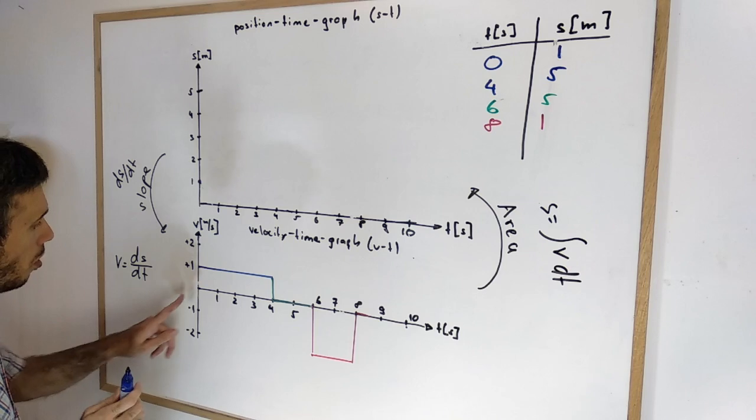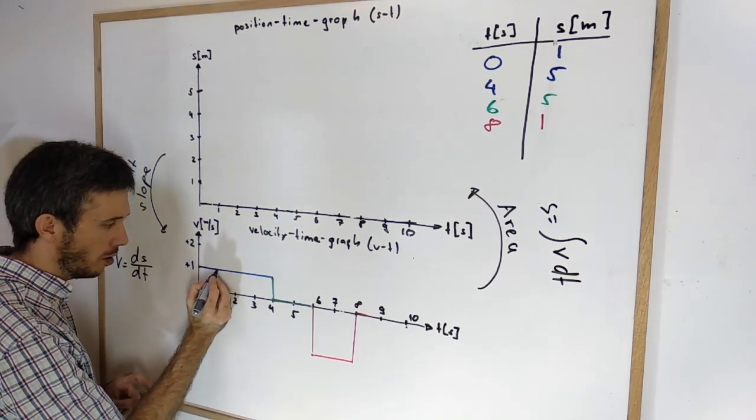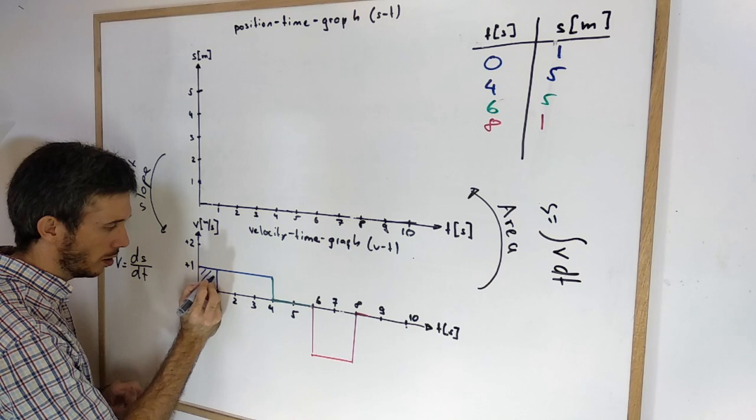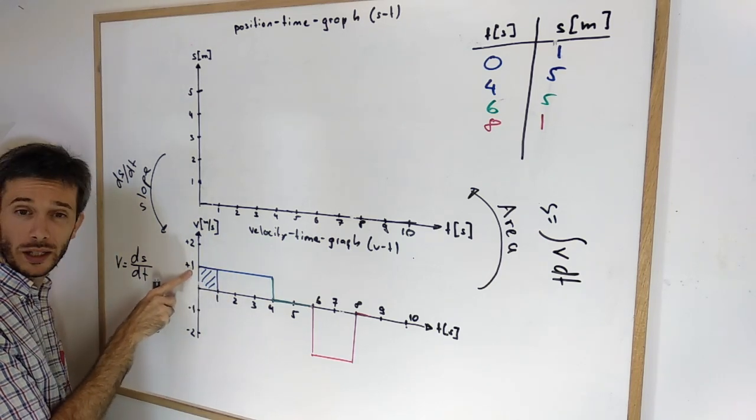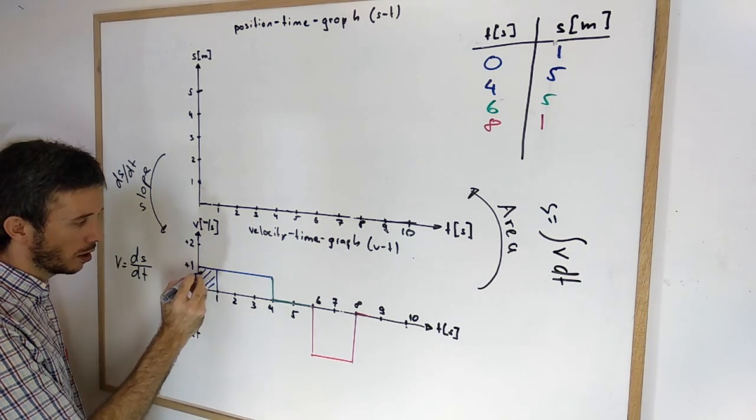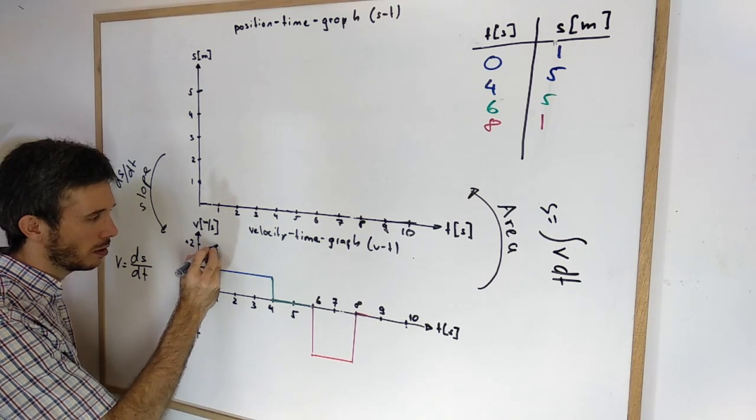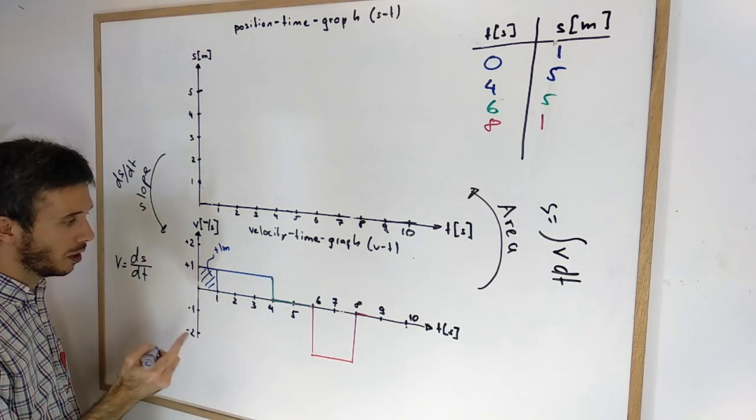So in this example, from 0 to 1 second, the area, if you calculate it, was 1 meter per second times 1 second. So we had plus 1 meter of displacement.